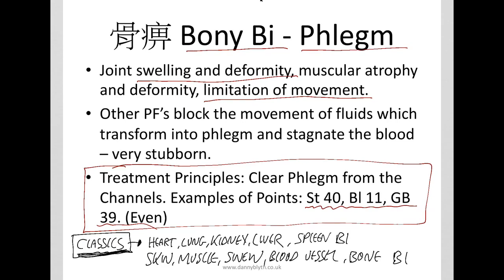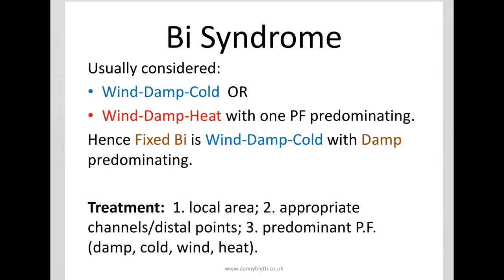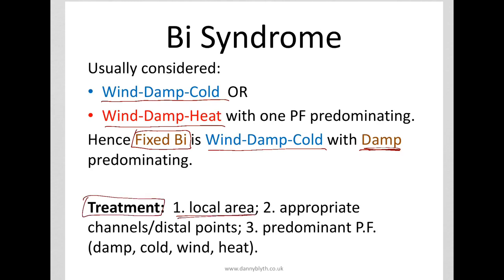If you read the classics you'll see that there's Bi syndrome associated with the five zang. For example, heart Bi also gives palpitations, anxiety, and tight chest. In the Su Wen there's also skin, muscle, sinew, blood vessel, and bone Bi — so for example muscle Bi will give you tight muscles, cramps, and paraesthesia, but that's for another time. With Bi syndrome we usually consider whether it's wind-damp-cold or wind-damp-heat, certainly in a herbal vocabulary. Fixed Bi is wind-damp-cold with damp predominating. To treat it we'll treat the local area, use appropriate channels and distal points, and also treat the predominant pathogenic factor.